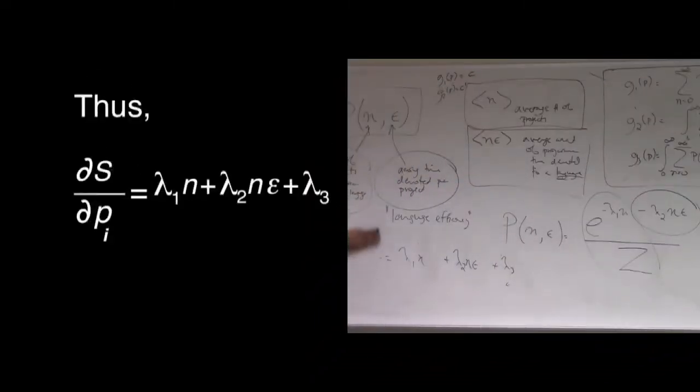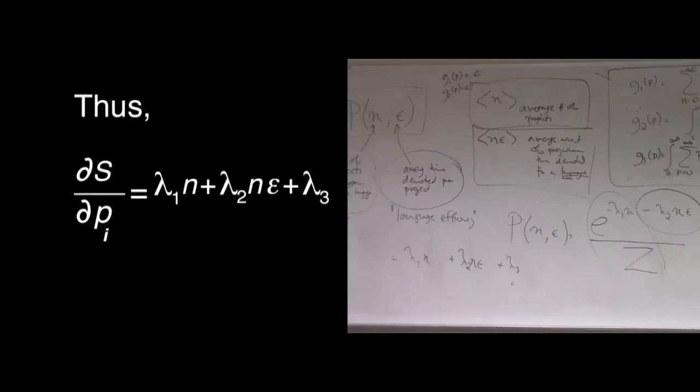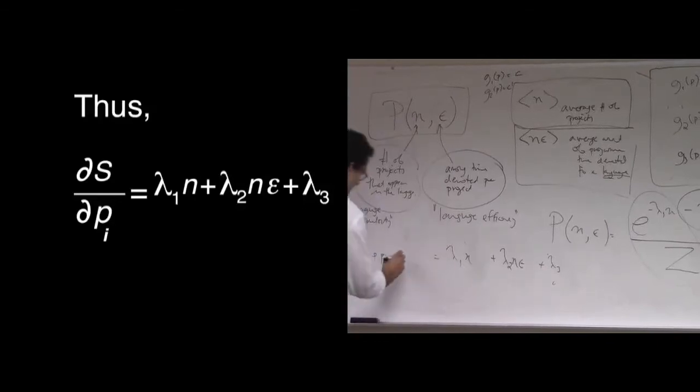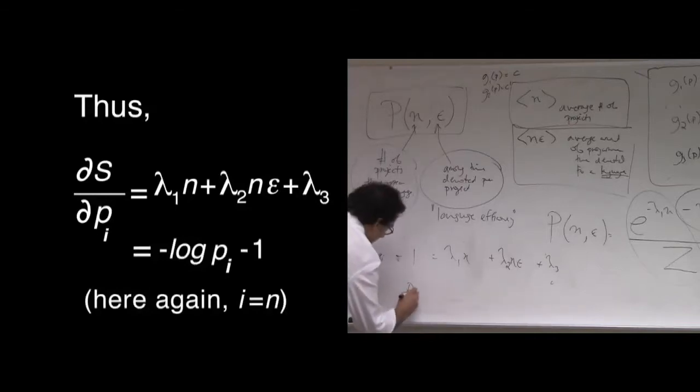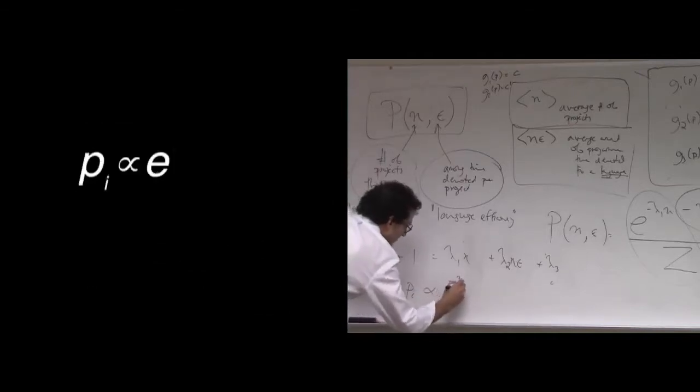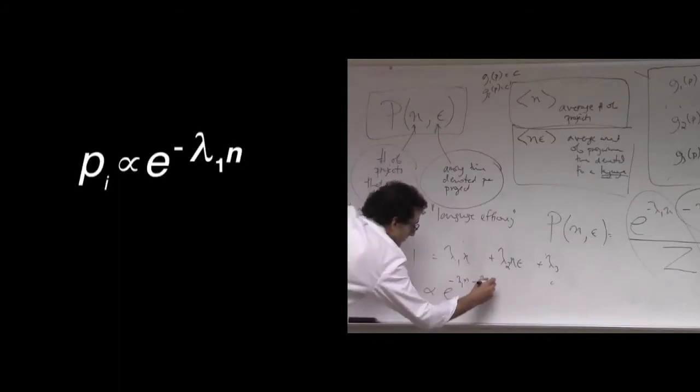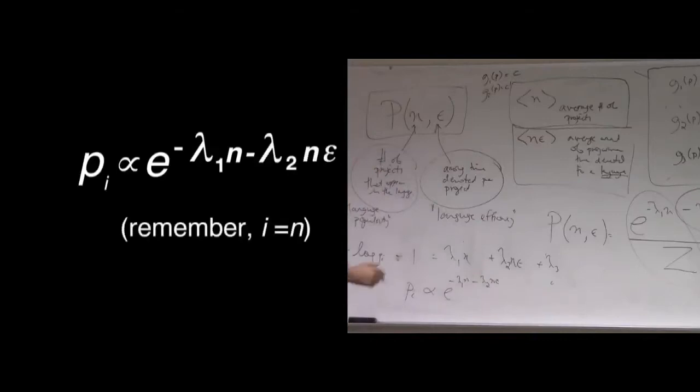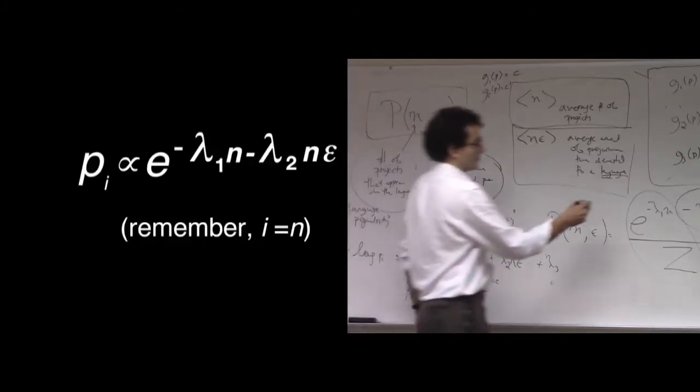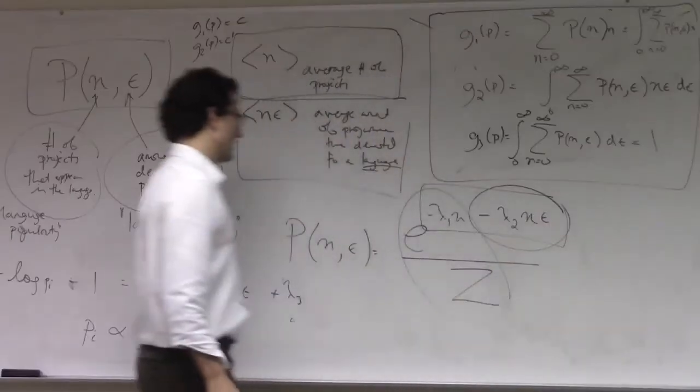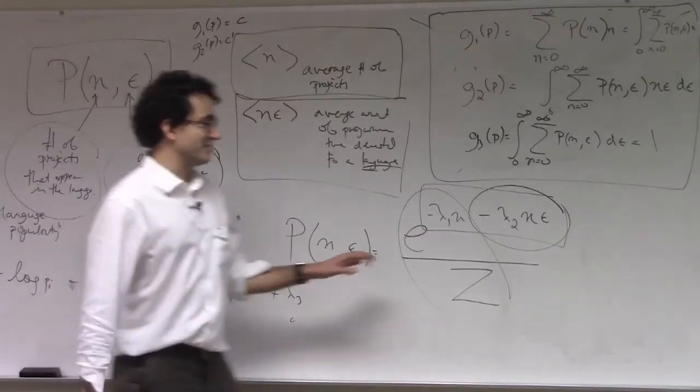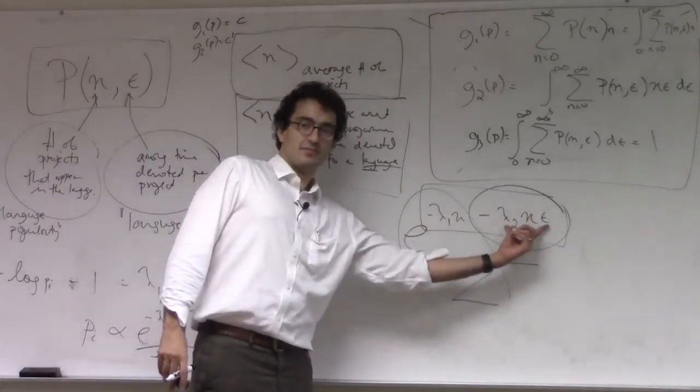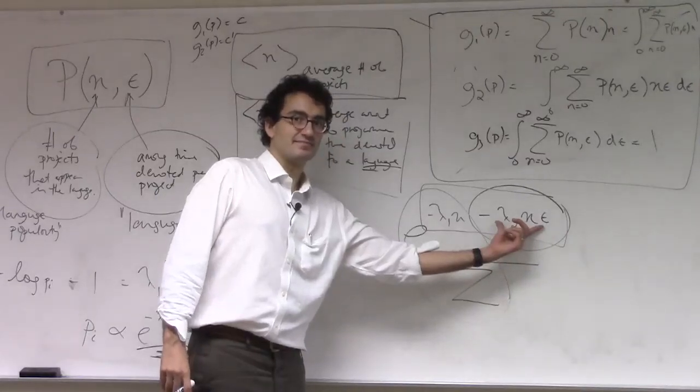On this other side here, the derivative of entropy with respect to pi is equal to negative log pi minus 1. And when I rearrange this, I get pi is proportional to e to the negative lambda 1 n minus lambda 2 n epsilon. Everything else can be factored into some underlying normalization here. So that's where this functional form comes from. And it's a general principle, a general rule of thumb, that if you want to see what the maximum entropy distribution is constraining, look term by term in the exponential to find it.